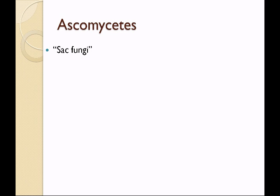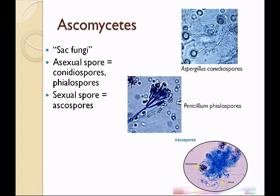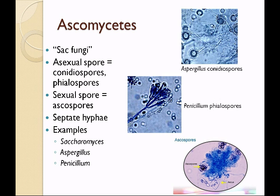The ascomycetes are known as sac fungi. The asexual spore will be conidiospores, and sometimes the conidiospores are called phialospores in the case of penicillium. Penicillium phialospores are born from a structure called a phialide. The sexual spore is called an ascospore, and it is produced within a sac called an ascus. They have septate hyphae. Examples are saccharomyces, which is a common bread yeast, and aspergillus, which is a very common environmental contaminant that can cause disease such as lung infections.